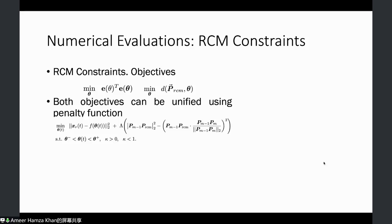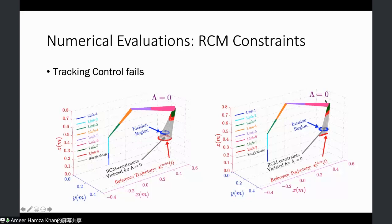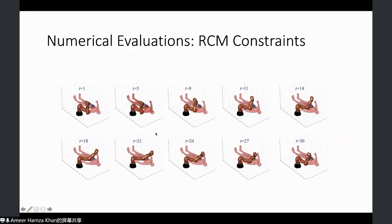For the RCM constraint results, we use the same optimization framework. With the reference trajectory and incision point defined, the RCM point is at the middle. When the RCM constraint term is turned off (lambda equals zero), the trajectory moves out of the incision point at various positions. When lambda is set to a finite non-zero value, at no point does the trajectory move out of the incision region. The same result holds for a linear path, and visualization confirms the robot follows the reference trajectory while maintaining the RCM constraint.